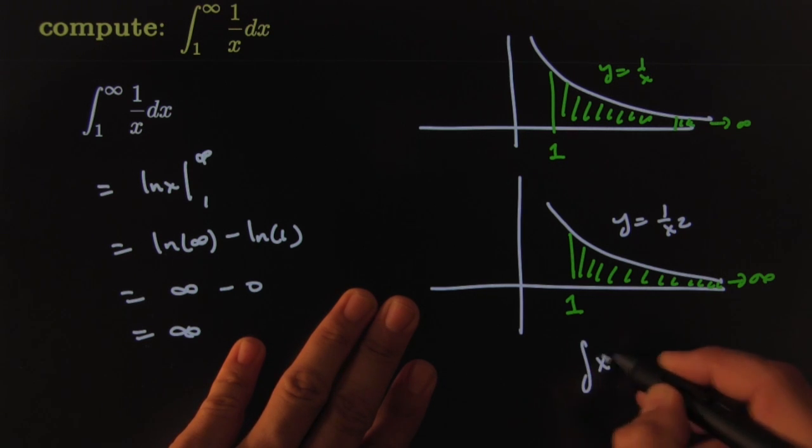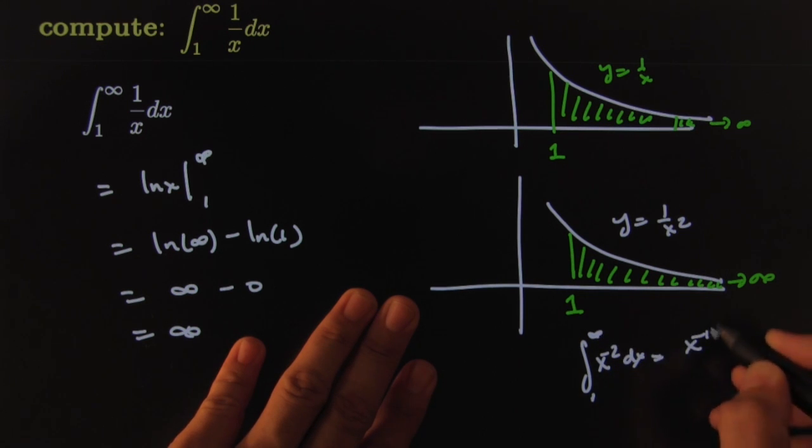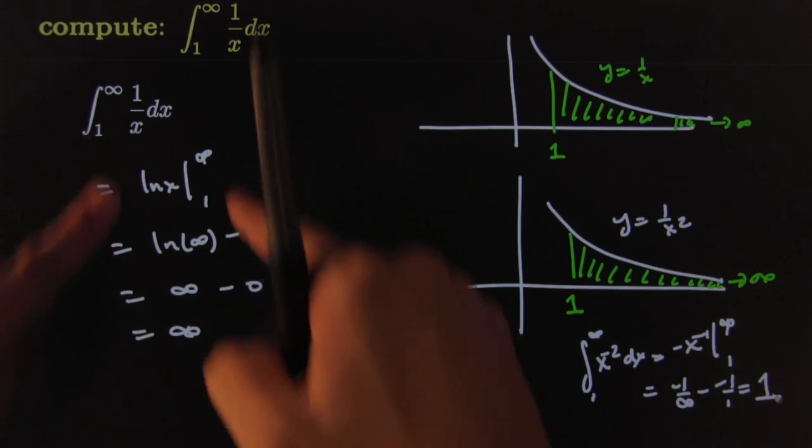It was x to the negative 1 from 1 to infinity. It was equal to negative 1 over infinity minus negative 1 over 1. It was equal to 1. What? No way!